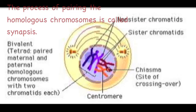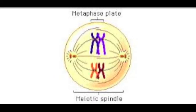Just like in mitosis metaphase, in meiosis 1, the chromosomes line up on the metaphase plate, except this time the homologous pairs prepare to be separated. Independent assortment causes the arrangement along the plate to be random, which contributes to genetic diversity.